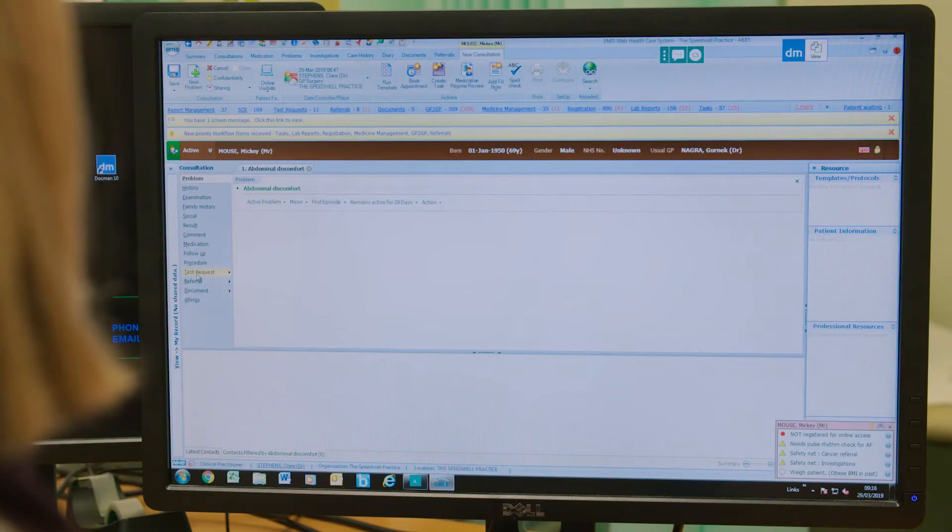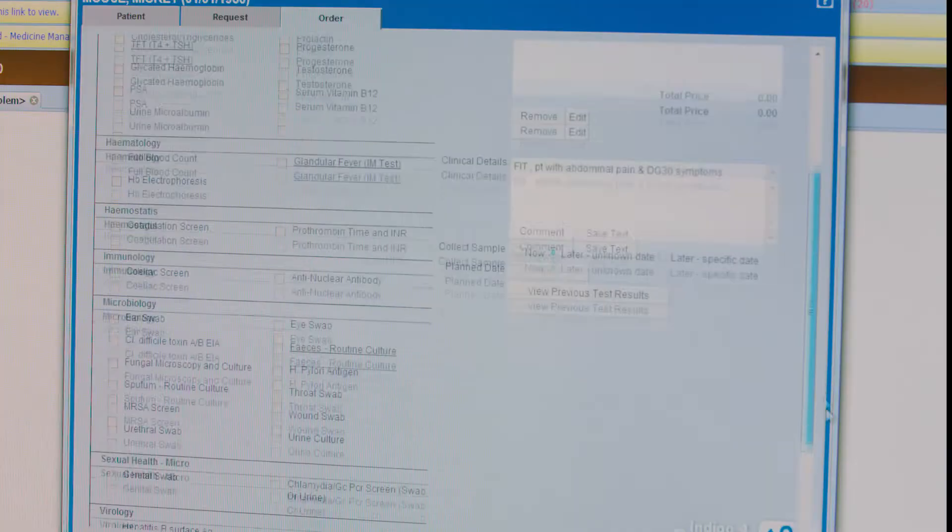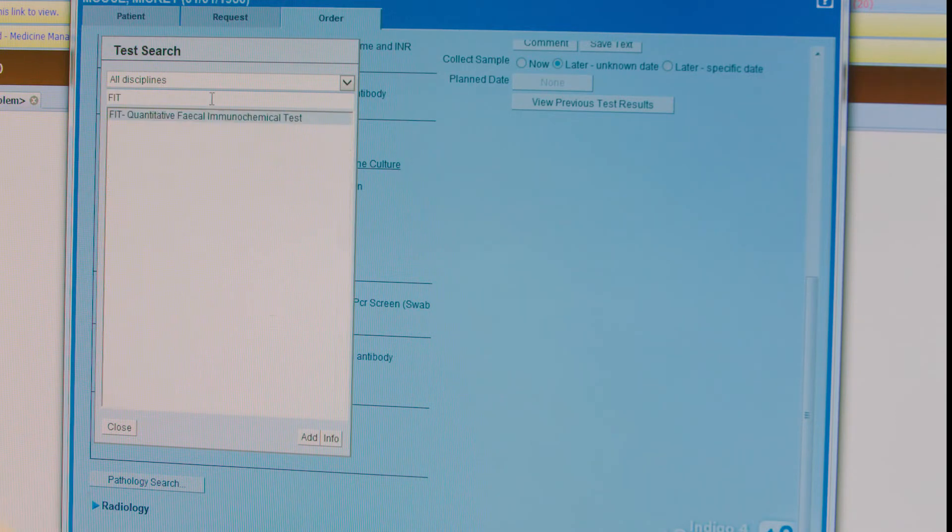So to order the FIT test, it's really simple. Let's have a look at how I do it. Within EMIS, come to Test Request menu on the left-hand side. We go to Online Test Request and choose your local hospital. Pop down to the bottom, press Pathology Search, and in the search bar, type FIT, highlighted.